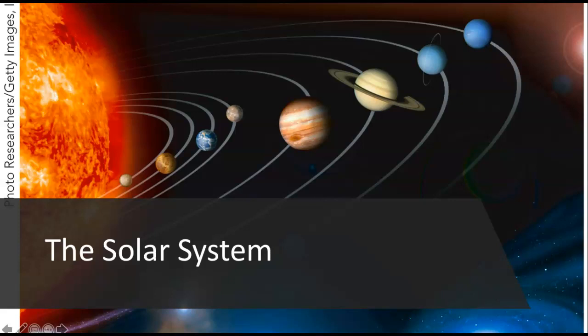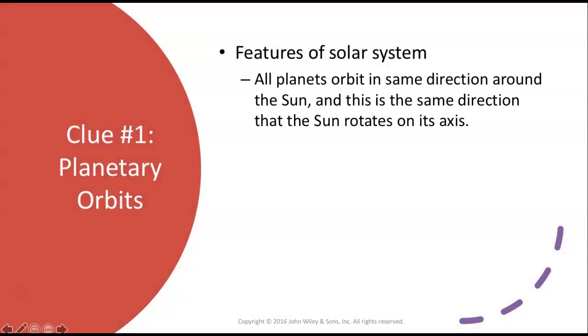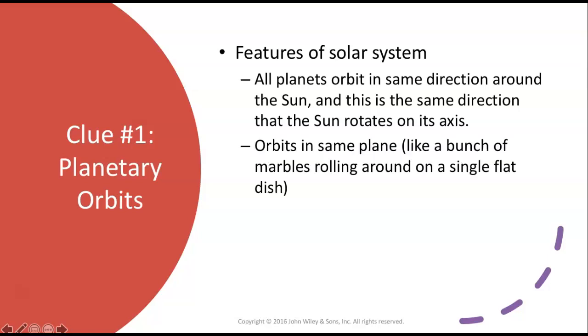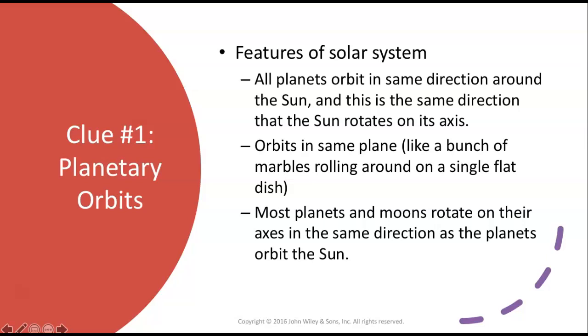Scientists have been trying for thousands of years to figure out how all of this came to be. Until recently, all we could do was observe the objects from Earth. More recently, we've got orbiting space probes and flyby missions that have returned close-up photos and information of several planets, while spacecraft have landed on Venus, Mars, Saturn's moon Titan, Pluto, and even a comet. As astronomers gather data, they notice several striking similarities and patterns that give us clues about the evolution of our home. Clue number one is planetary orbits.